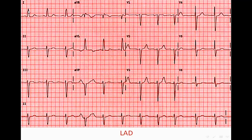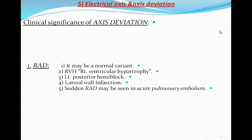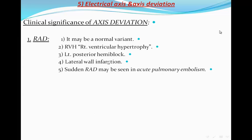Another example: Lead I is positive — so no right axis deviation. Lead III is negative — confirming left axis deviation. Regarding the degree: lead III is negative, AVF is also negative indicating more left axis deviation, and lead II is also negative, indicating severe left axis deviation.